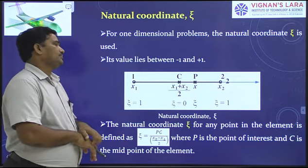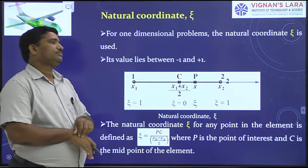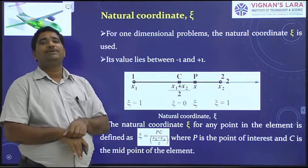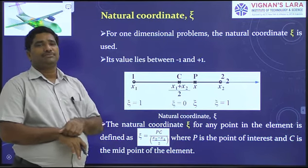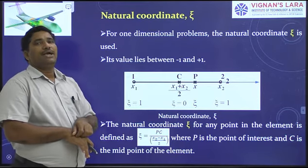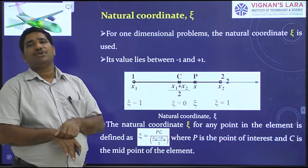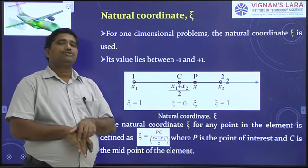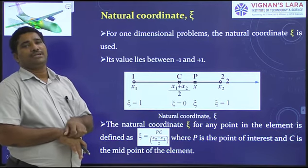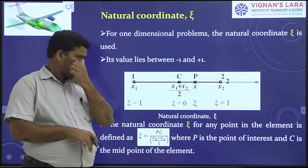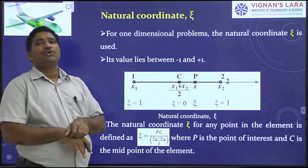Natural coordinates are the derived coordinates. They are used to derive element properties, and their values never exceed unity. At any point on the element, the sum of the natural coordinates is unity. To specify any point on the element, we can use the natural coordinate. Natural coordinates are considered as local coordinates.